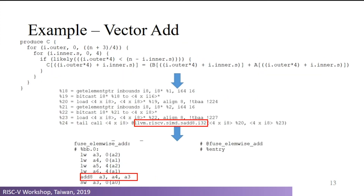This is a basic example of VectorAdd. The first picture shows the Halide IR part, and the second picture shows the LLVM IR generated by TVM — you can see that we have already changed the VectorAdd into an intrinsic. Then we pass it through the LLVM backend engine and it generates the corresponding P-extension assembly instructions shown in the third picture.